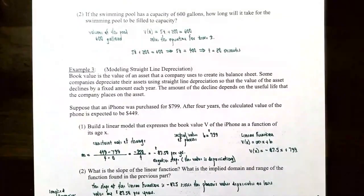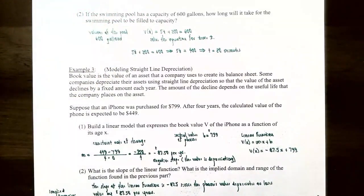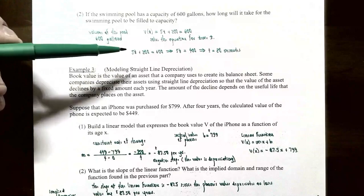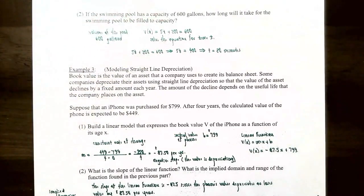Number two: if the swimming pool has a capacity of 600 gallons, how long will it take to fill? Using the model v(t) = 5t + 200, set it equal to 600: 5t + 200 = 600. Subtract 200 from both sides to get 5t = 400, then divide by 5 to get t = 80 minutes. The swimming pool will be filled to capacity after 80 minutes.